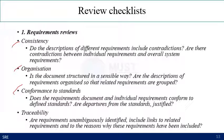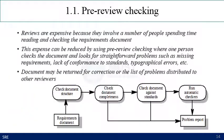Traceability of requirements can also be identified in the review checklist — you check for unambiguous requirement identifications, including links to related requirements and reasons why those requirements have been included. In the requirement review process you can use a number of methods: pre-review checking, walkthroughs, or requirement inspections. Pre-review checking is done before conducting the review meetings. Reviews are usually very expensive because they involve many people spending significant time reading and checking requirement documents.